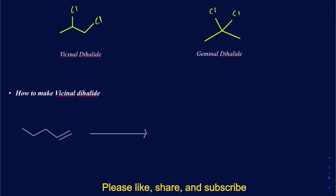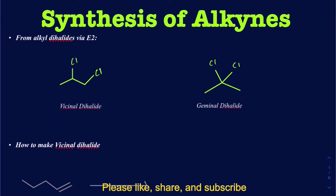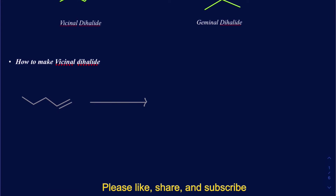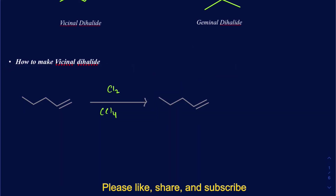Vicinal dihalides can be made from alkenes, while germinal dihalides are made through alkynes. So to synthesize alkynes, you would first go through the synthesis of alkenes and then make vicinal dihalides. To make a vicinal dihalide from an alkene, you can use Cl₂ with CCl₄, which places chlorines on adjacent carbons in an anti fashion.